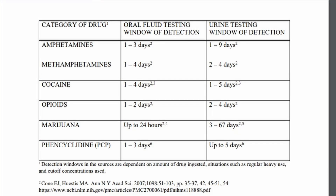Does that mean even the heaviest user will test positive for a maximum of two weeks after abstaining? At 15 days, are you guaranteed to pass? Unfortunately, that is not true — there are other factors at play. The federal government estimates someone could test over the 50 nanograms per milliliter cutoff anywhere from as low as three days all the way up to two months or more after abstaining from use.